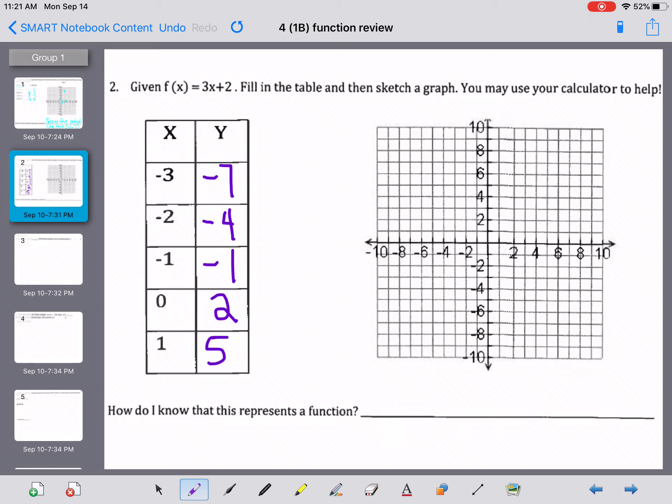So once again, negative 3, negative 7, we're going to go 3 spaces left from 0 and down 7. Negative 2, 2 spaces left and 4 down. Negative 1, 1 space left and 1 space down. 0, 2, and 1, 5. Oops, almost missed it.